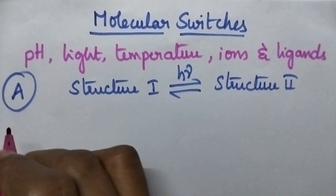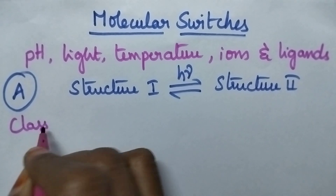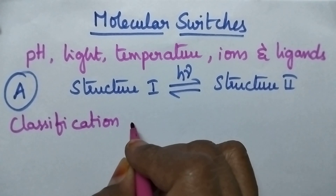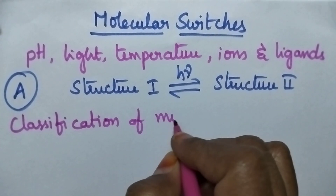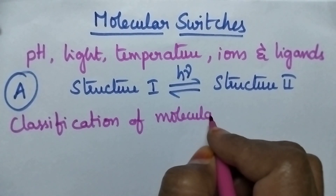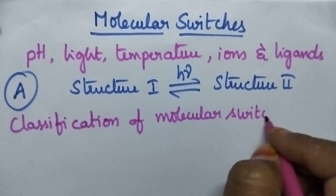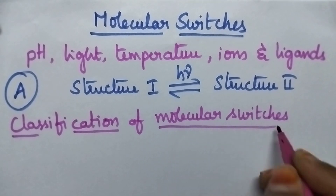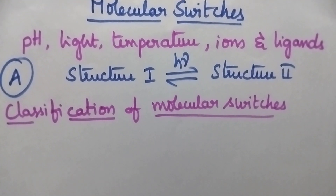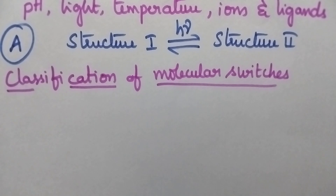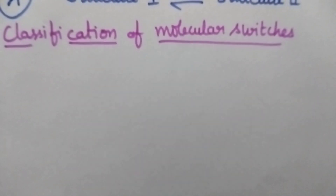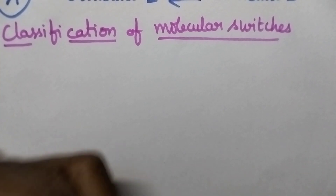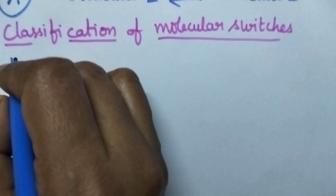Now let us discuss about the classification of molecular switches. These molecular switches can be classified into many types. Let us discuss about the important categories. The first category includes acidochromic molecular switches.